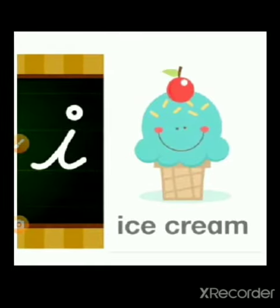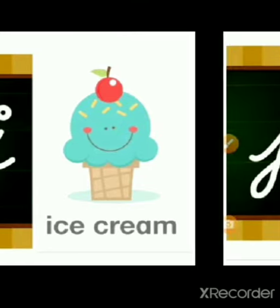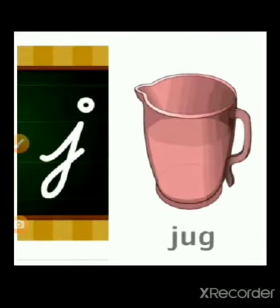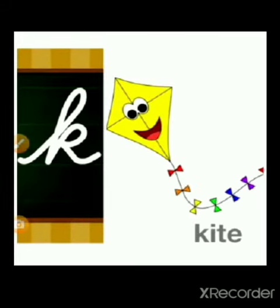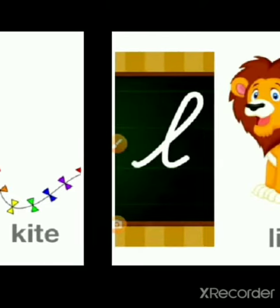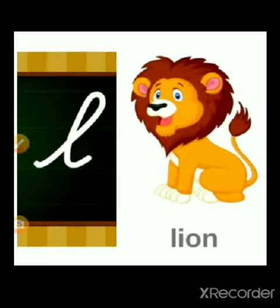I for ice cream, J for jug, K for kite, L for lion.